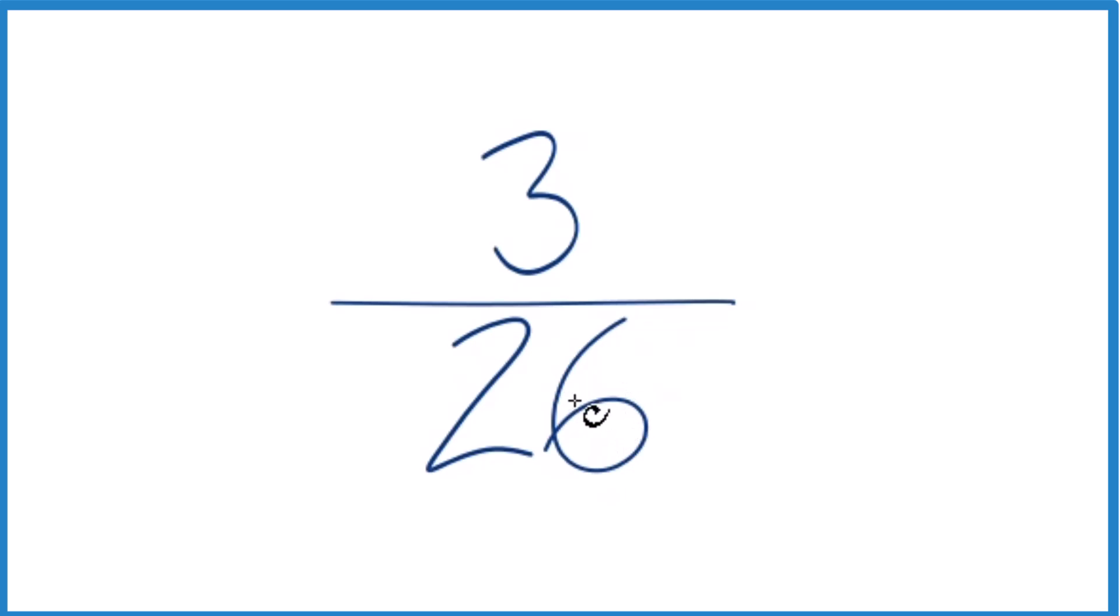and we're looking for the greatest common factor. The thing is, the only number that goes into both 3 and 26, the only whole number that goes into 3 and 26, is 1.